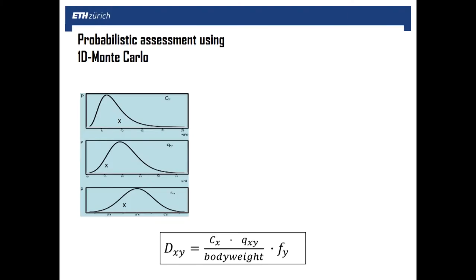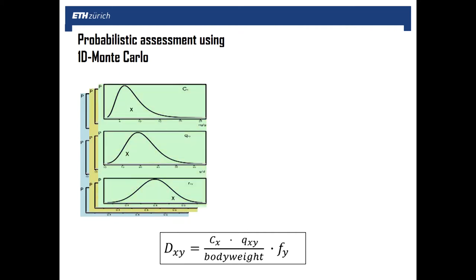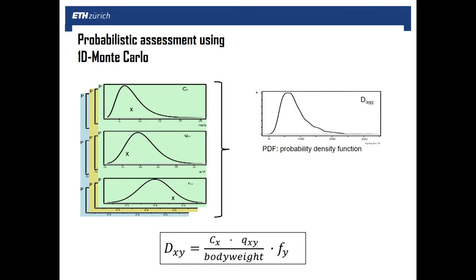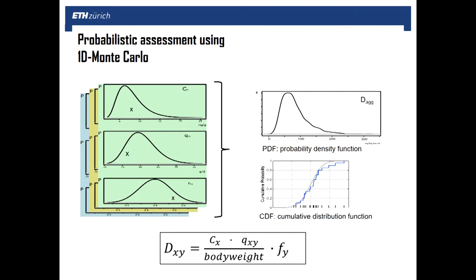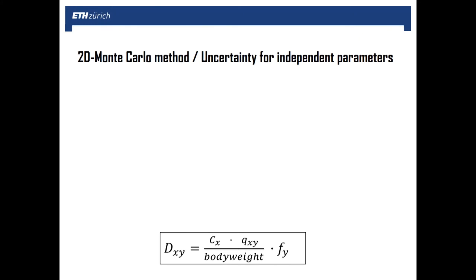These can be treated very easily by frequentist methods applied regularly — for example, a probabilistic assessment using 1D Monte Carlo. What we do in a 1D Monte Carlo probabilistic approach is that we think of all the parameters in the equation as having a distribution. We perform multiple steps, for example 1,000 steps. For each step, I pick one parameter value from the distribution, put them together, calculate my dose, and then I have my probability density function.